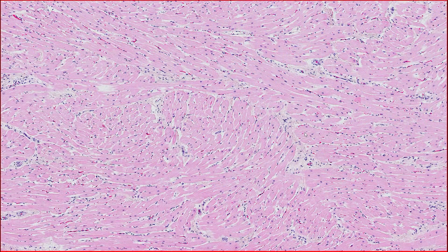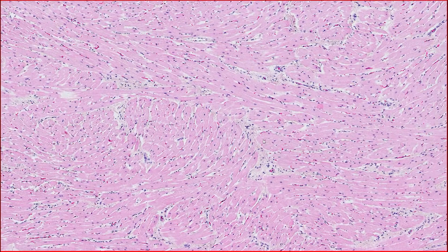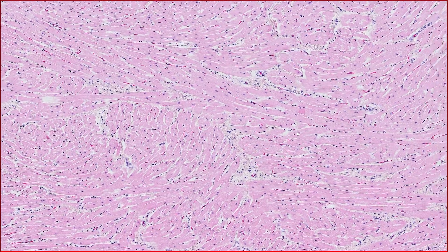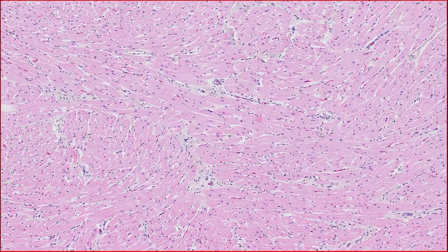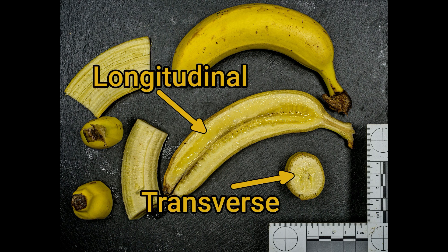Now, on to the meat of heart histology — the cardiac muscle itself. A key point to remember is that cardiac muscle fibres can be seen in either transverse or longitudinal sections, but most identifying features are visible in longitudinal sections. So let's find a region where the muscle is well-sectioned longitudinally.